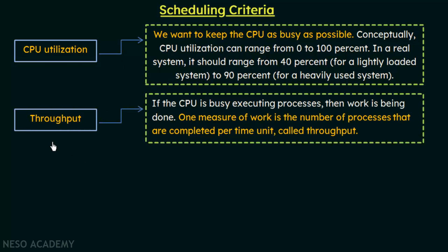The next criterion is throughput. If the CPU is busy executing processes, then work is being done. One measure of that work is the number of processes that are completed per unit time, called throughput. We can measure the work done by the CPU by calculating throughput — that is, how many processes are completed per unit time.